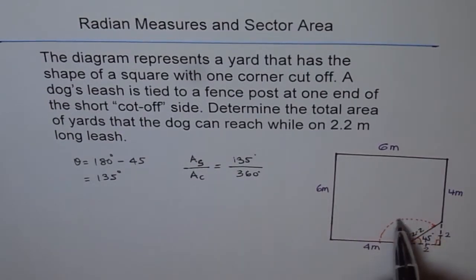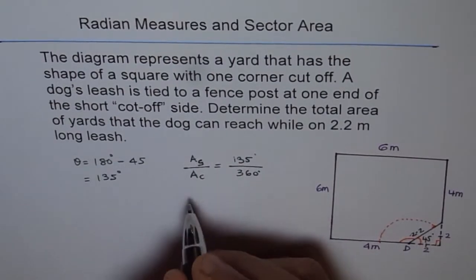Perfect. Now what is the area of the circle with radius of 2.2? Area of circle is pi r squared.